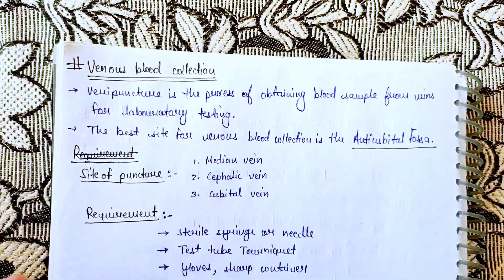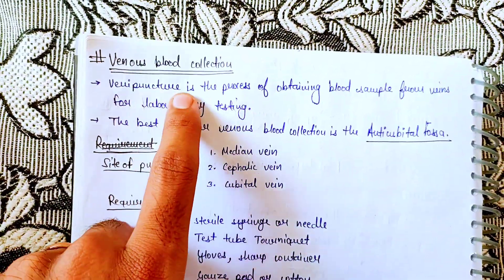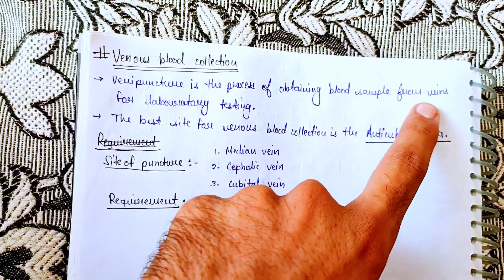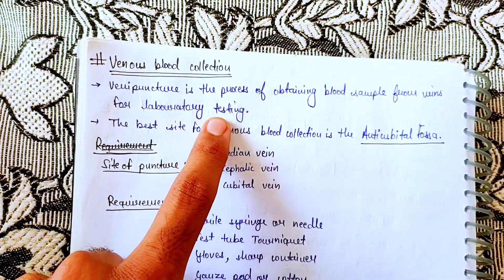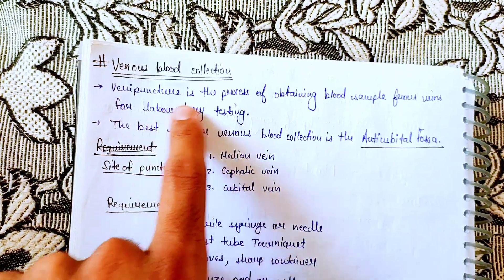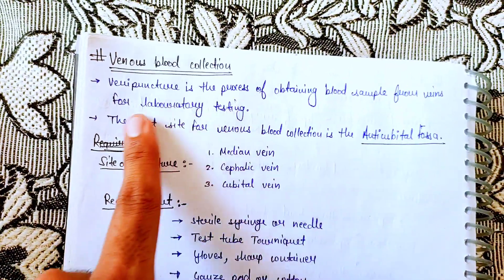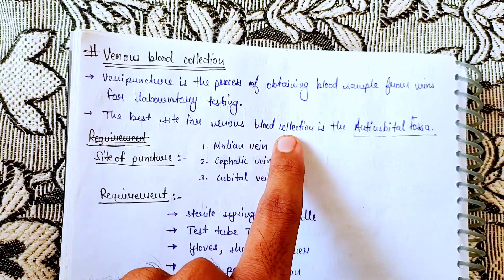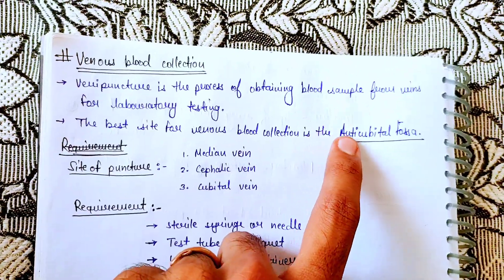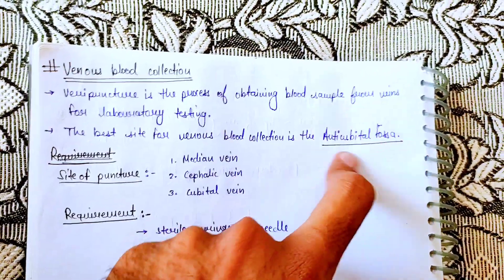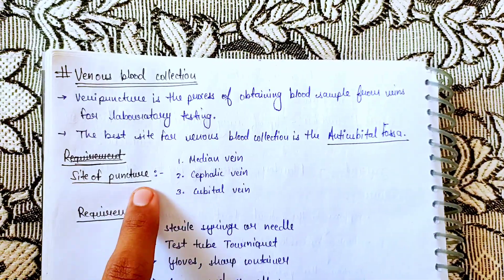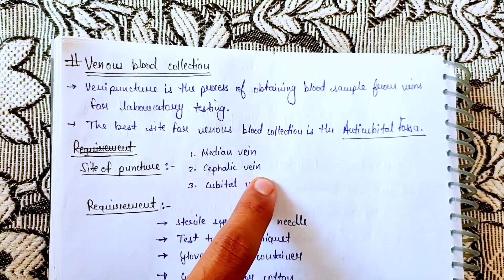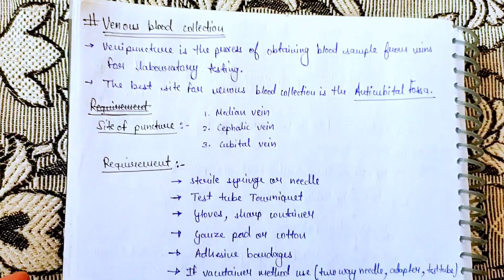Next is venous blood collection. Venipuncture is the process of obtaining a blood sample from veins for laboratory testing. The best site for venous blood collection is the antecubital fossa. The three main veins used are the medial vein, cephalic vein, and cubital vein.